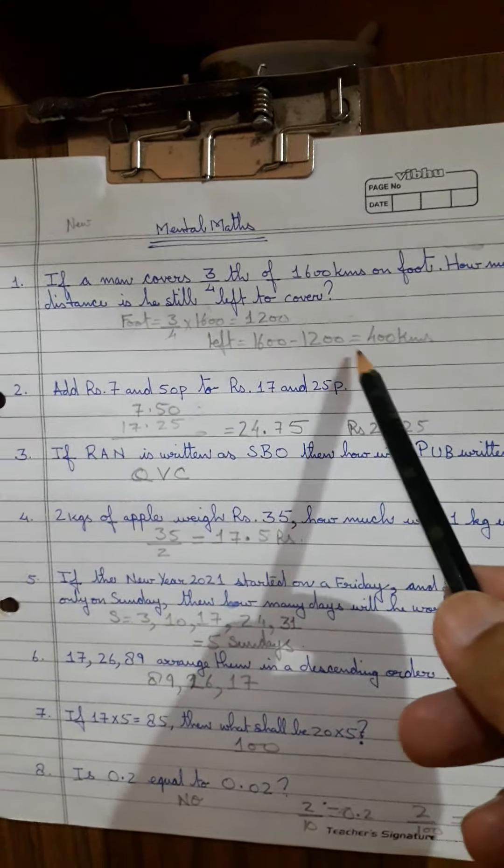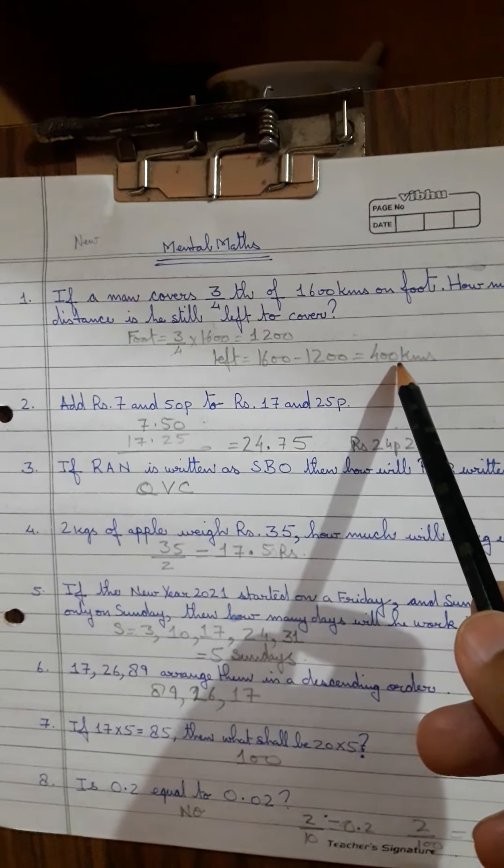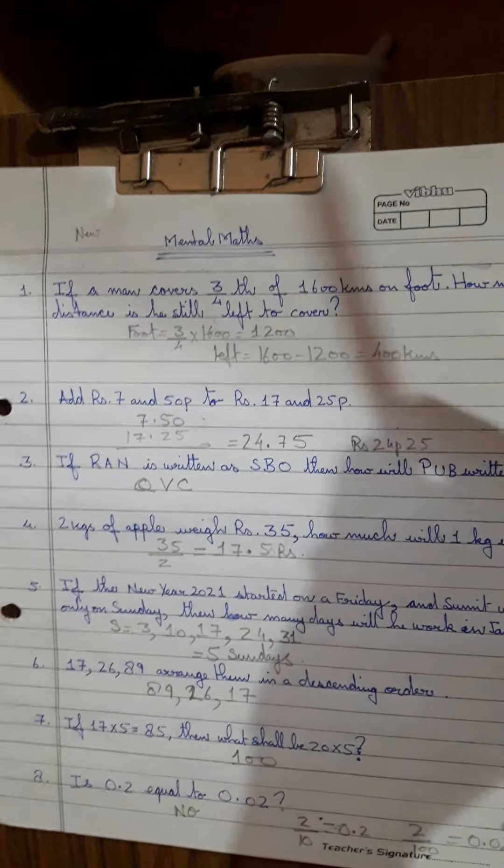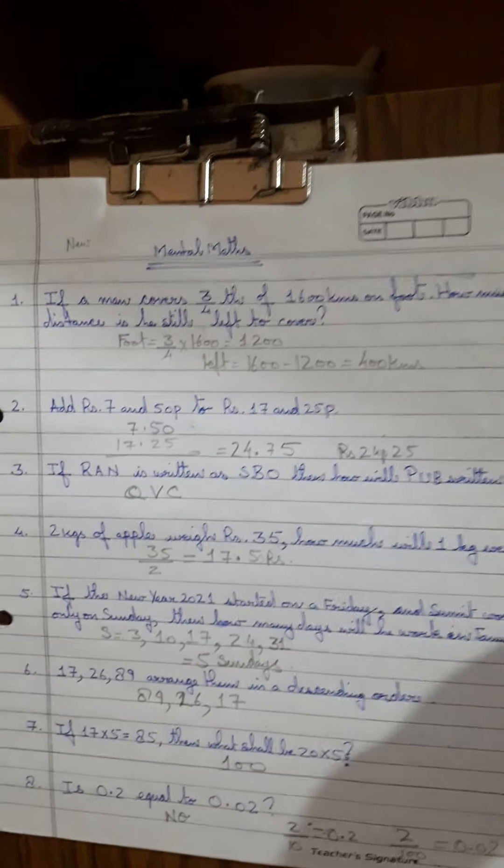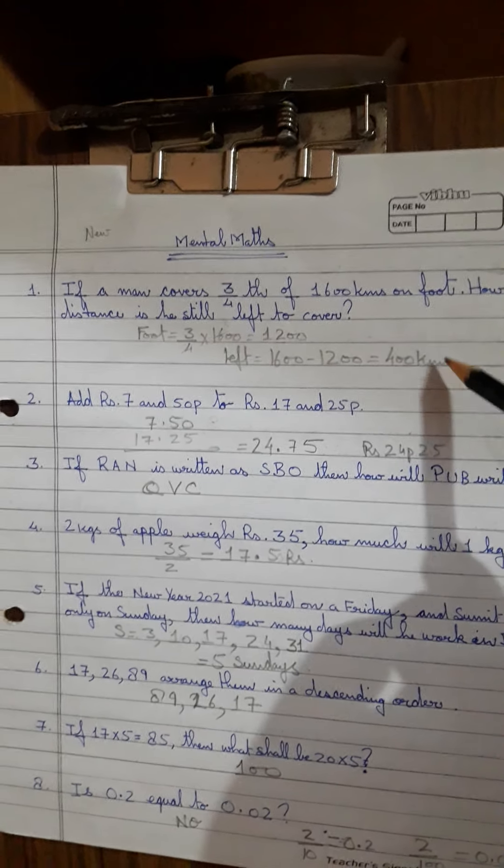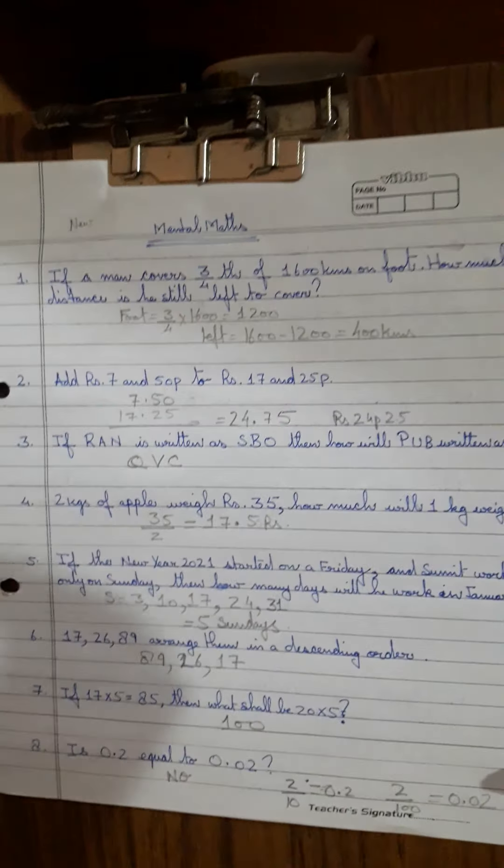So 1600 minus 1200 is 400. Or the other way could have been where you just thought of 1600, three-fourths he has already covered, so take out one-fourth of 1600, you anyways will get 400 kilometers as the answer. This is your first answer.